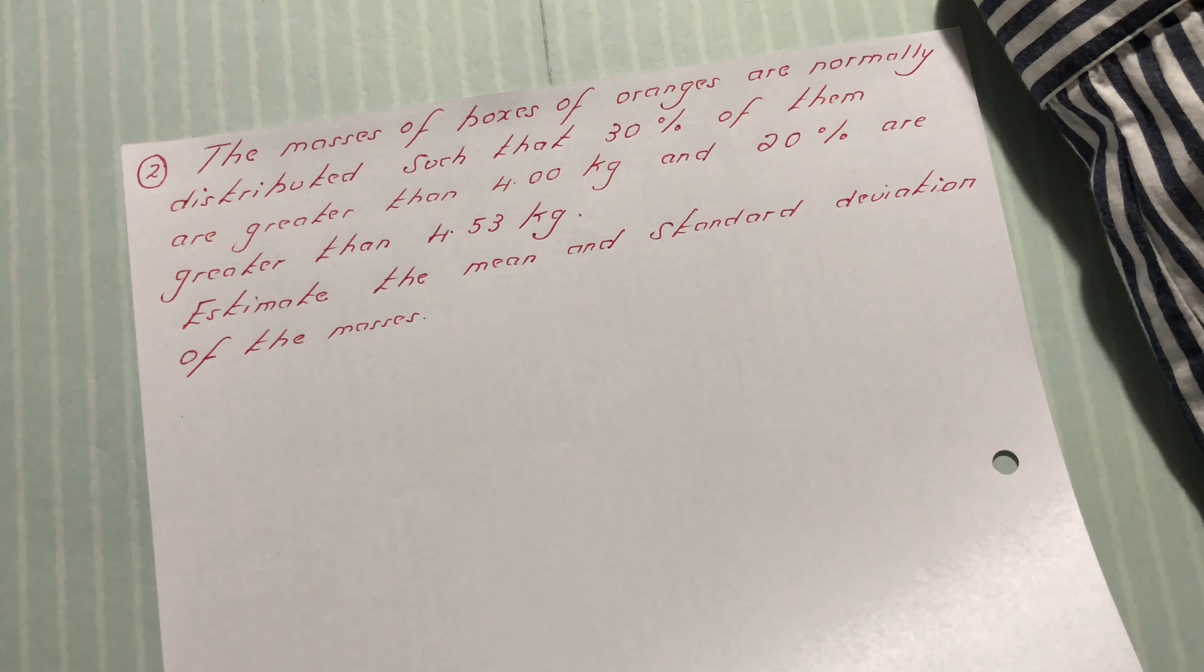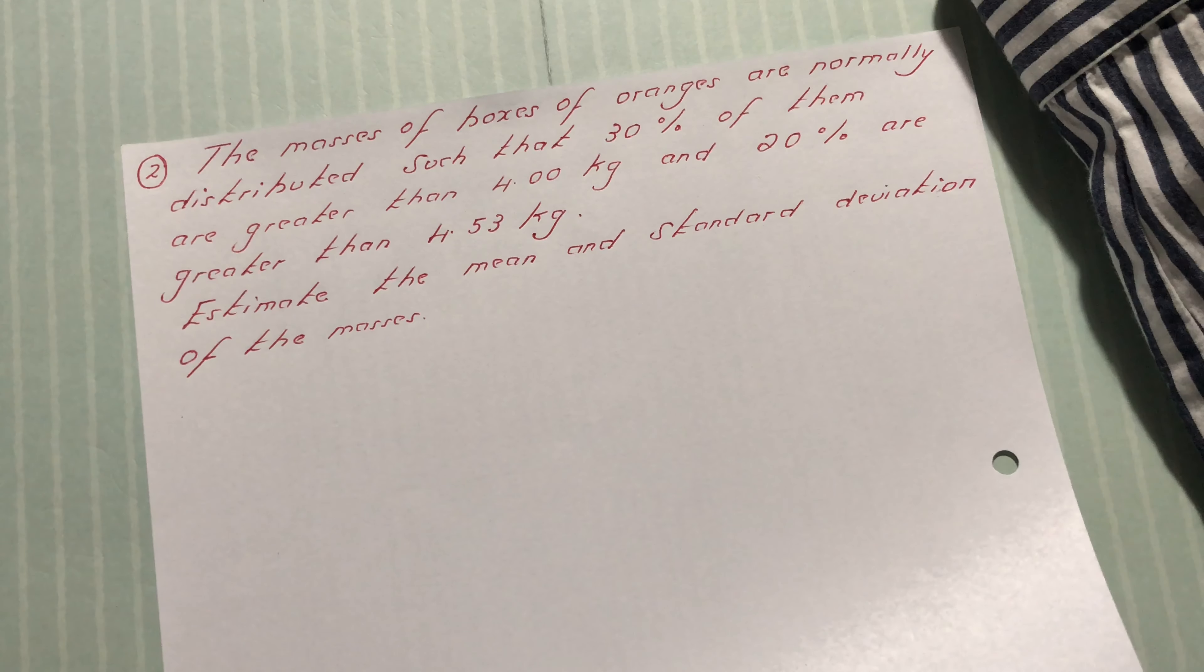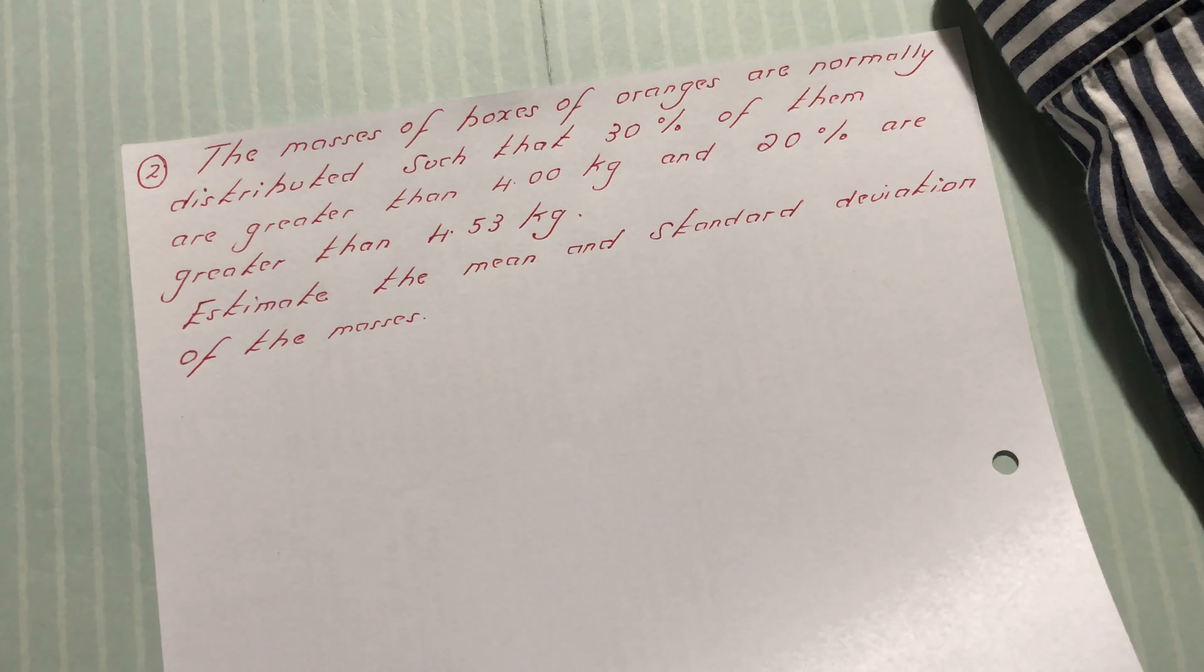Question 3. The masses of boxes of oranges are normally distributed such that 30% of them are greater than 4 kg and 20% are greater than 4.53 kg. Estimate the mean and standard deviation of the masses.